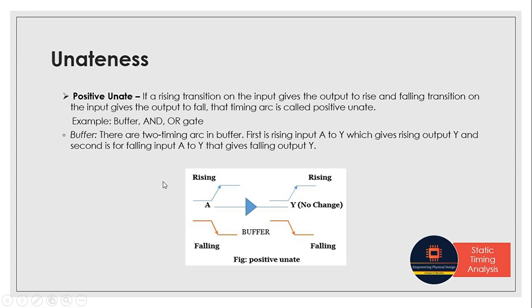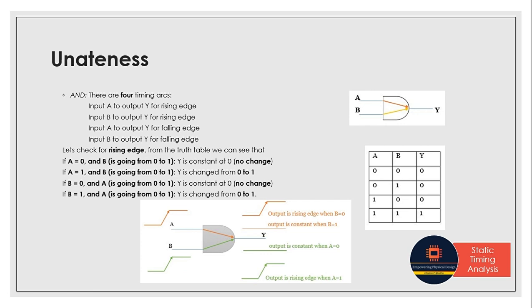Examples of positive unateness are buffer and AND gate. For a buffer with input A and output Y, it has two timing arcs: when we give a rising input we get a rising output, and when we give a falling input we get a falling output. For an AND gate with two inputs, we get four timing arcs covering rising and falling transitions for each input.